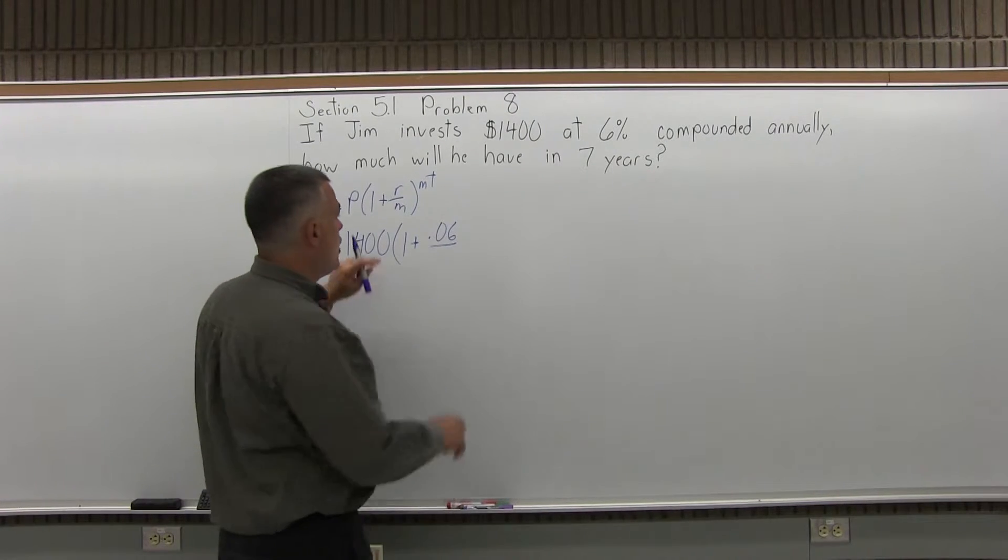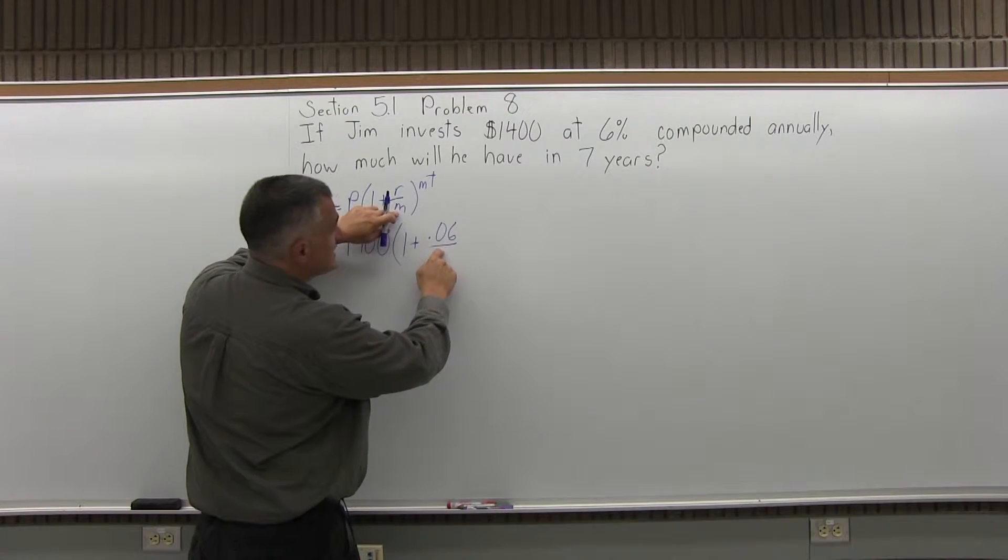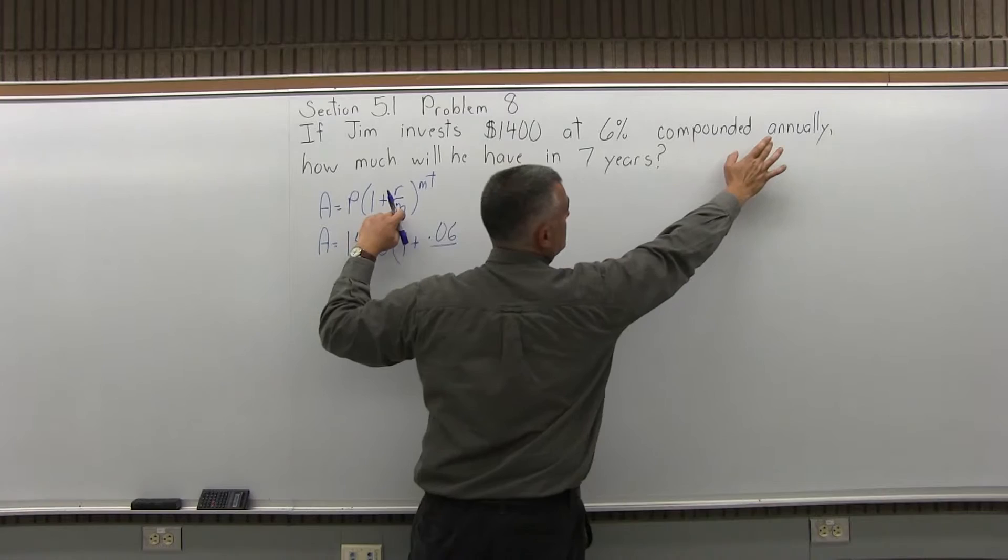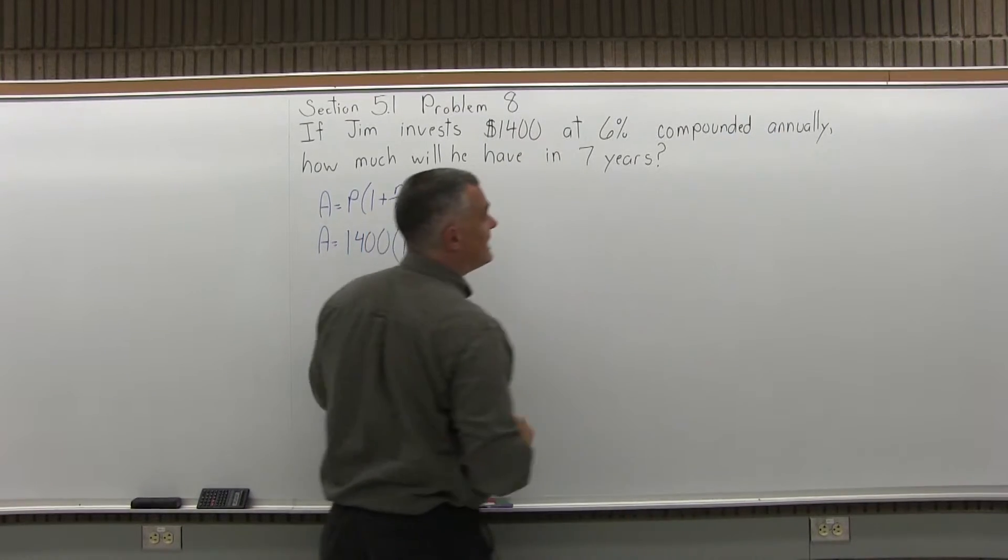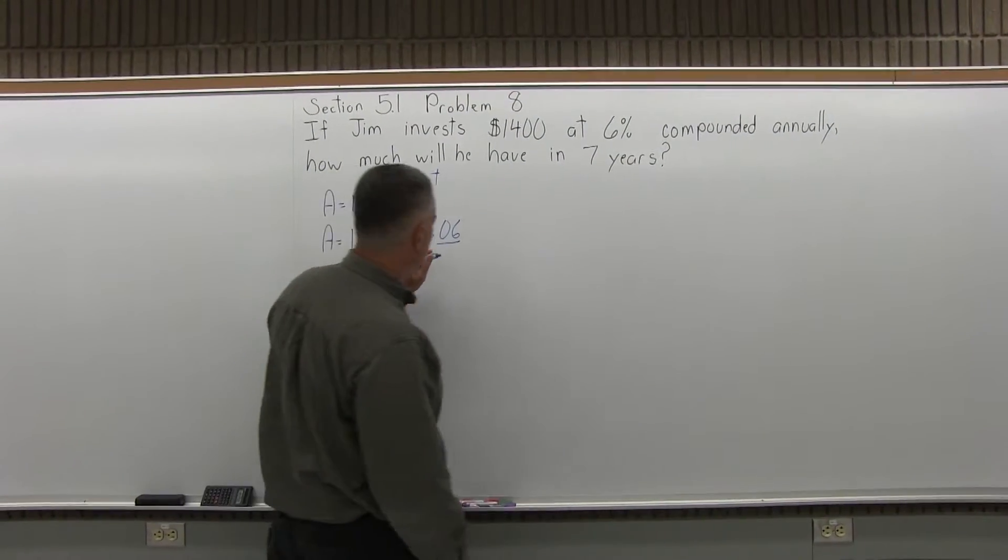Over M. M is the number of times compounded per year, so this problem says annually, so M is 1. They compound once per year.